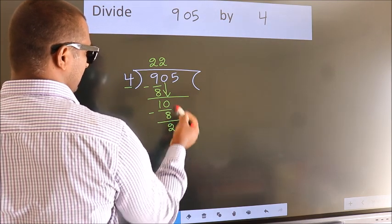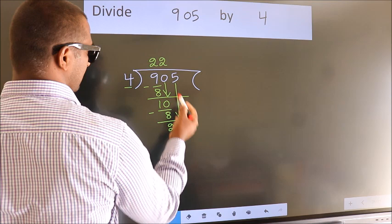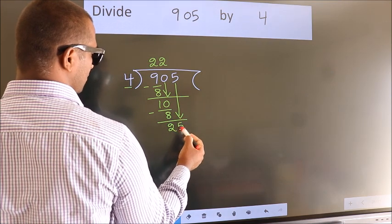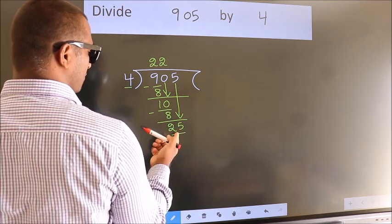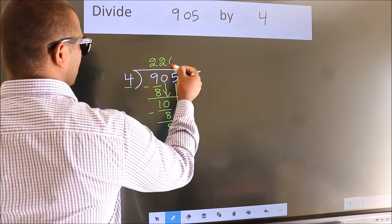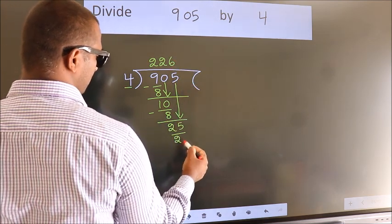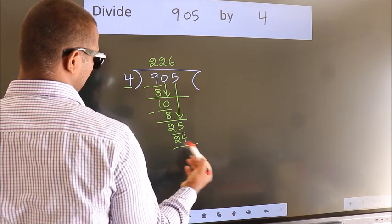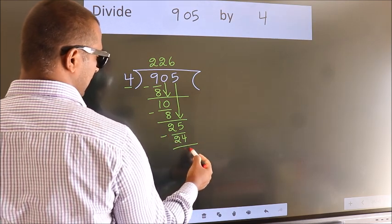After this, bring down the beside number. So, 5 down. So, 25. A number close to 25 in 4 table is 4 6 24. Now, we subtract. We get 1.